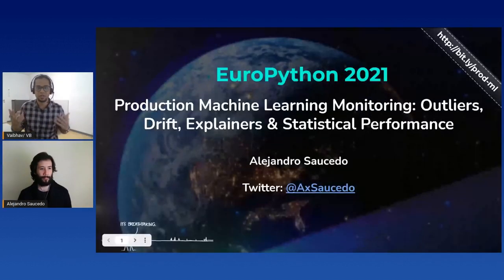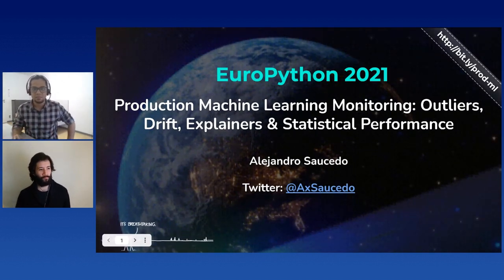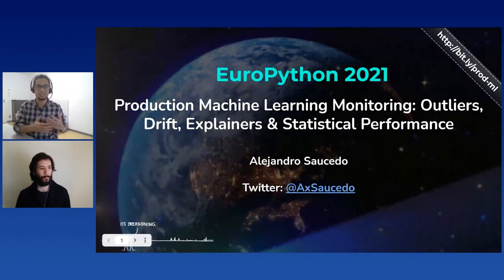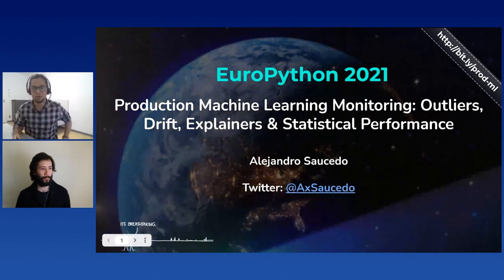Next up we have a talk from Alejandro, who's going to be talking to us about production machine learning monitoring — essentially how do we deal with outliers, drift, and the overall statistical performance of the model. Alejandro is the Chief Scientist at the Institute of Ethical AI and Machine Learning, and also the Director of Machine Learning at Seldon Technologies. The stage is all yours, Alejandro.